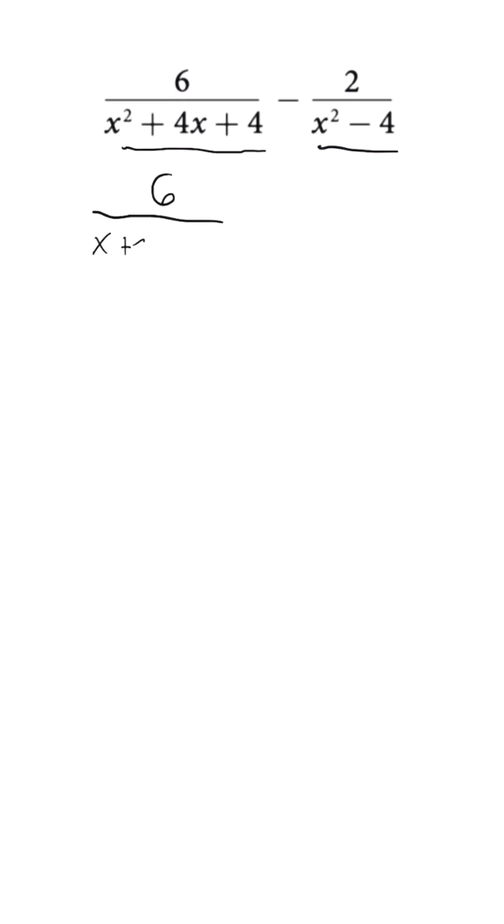First trinomial breaks down to x plus 2 times x plus 2. Our second expression is the difference of squares which breaks down to x plus 2 times x minus 2.